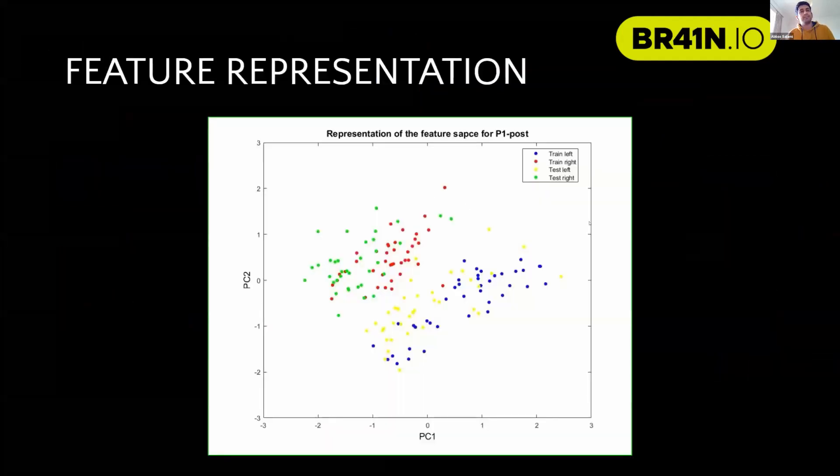At first, this is the visualization of the features extracted from the Riemannian analysis. These are the Riemannian features projected on the first two principal components. You can clearly see the differences between left and right hand. It's an easy task to discriminate between these two.